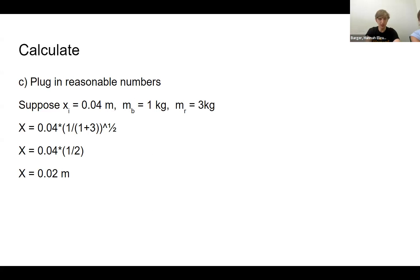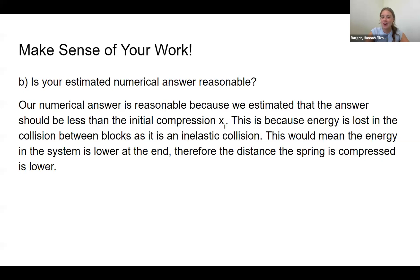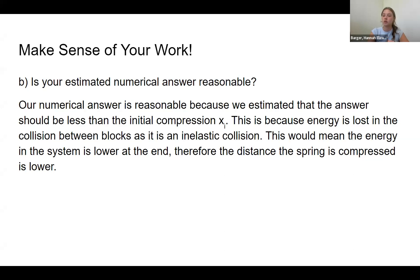Plugging in numbers — the red block is three kilograms — we calculate that the spring on the right is compressed two centimeters. The units check out; we wanted meters and we got meters. Our numerical answer is reasonable because we estimated symbolically that the answer should be less than the initial compression xi, and it was: it went from four centimeters to two centimeters. This confirms energy is lost in the inelastic collision, so the final spring compression is less than the initial compression.